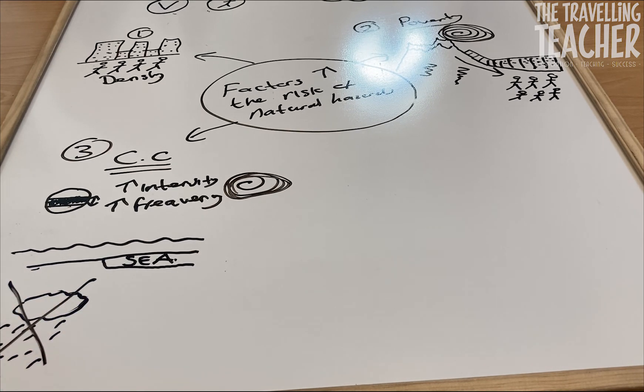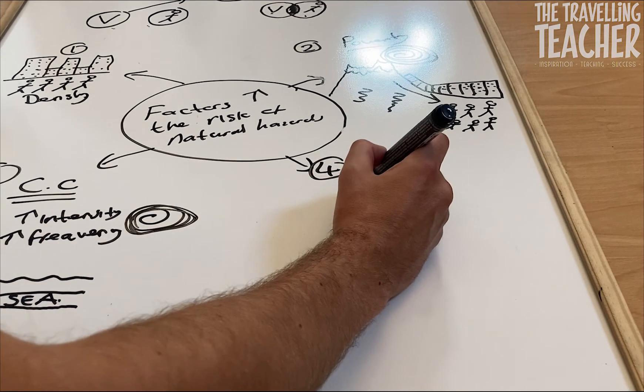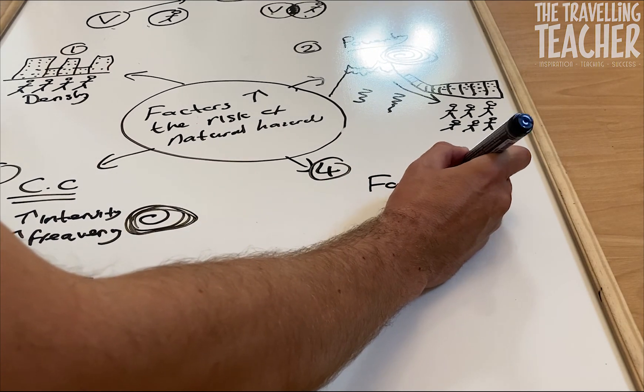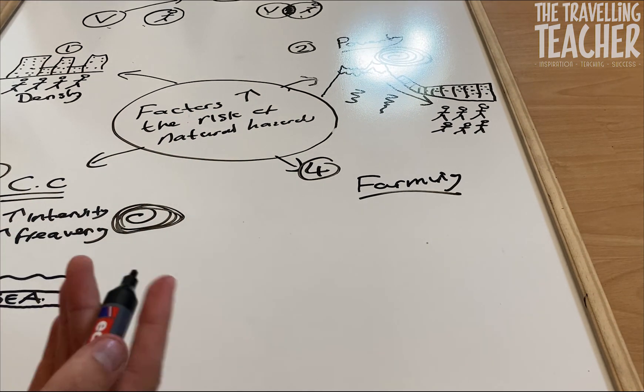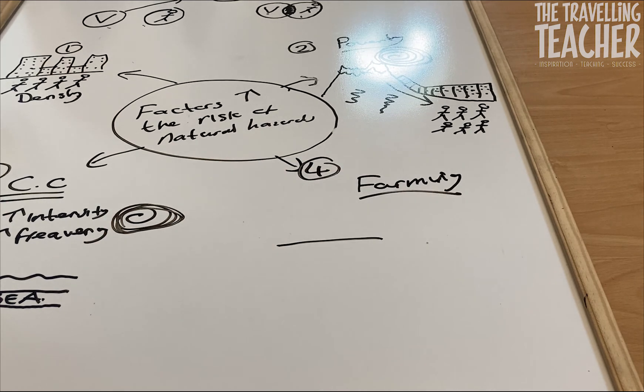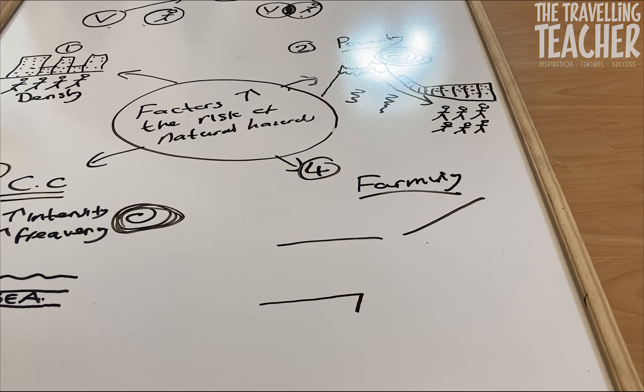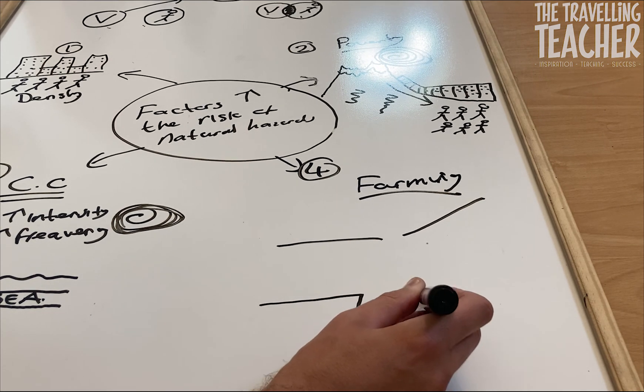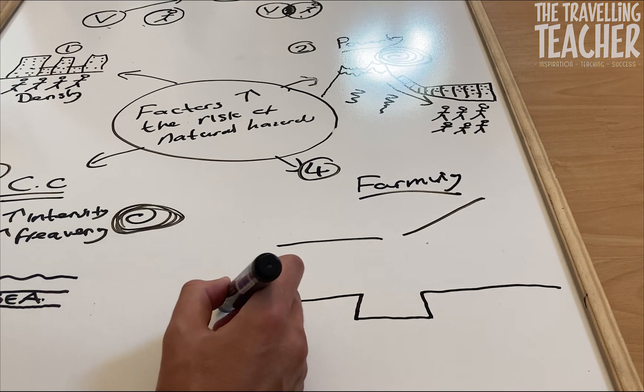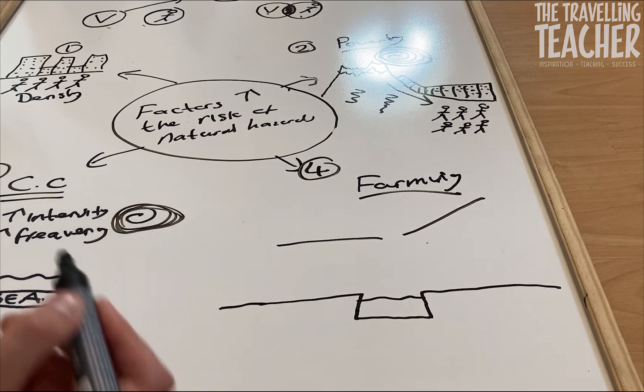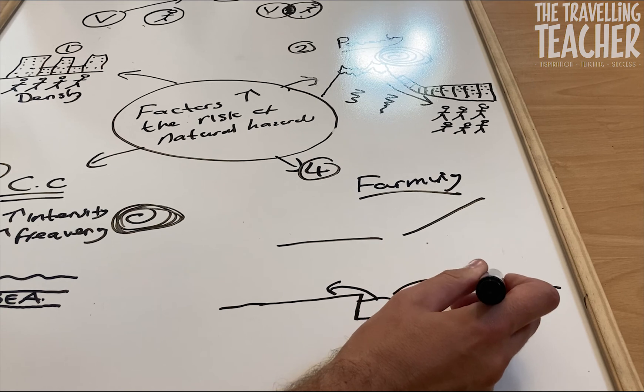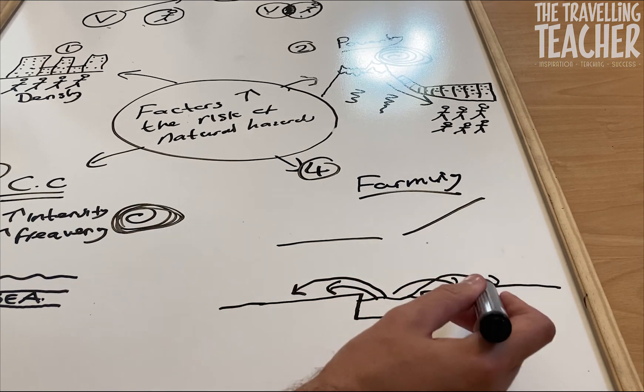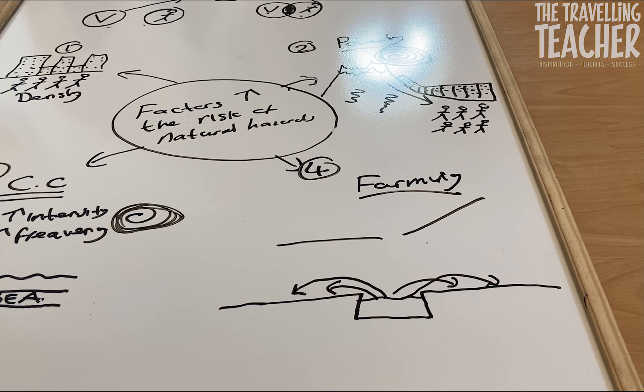And the fourth one is factors such as farming or agriculture. Now to grow crops, ideally we want land to be flat and not steep. So in areas such as Bangladesh, people are farming on flat flood plains, which of course are at risk of flooding due to the gradient of the land around the river.